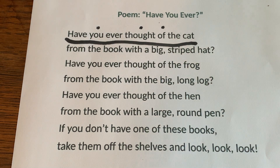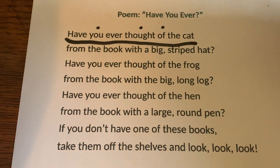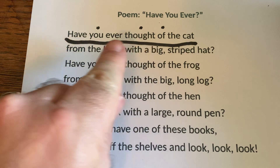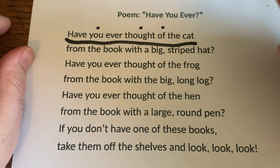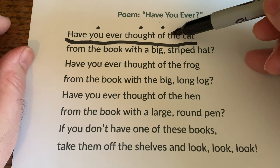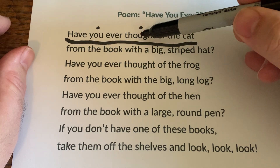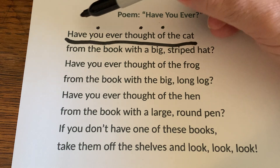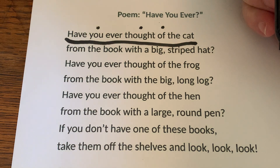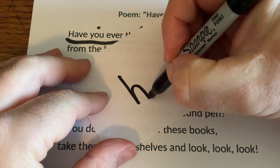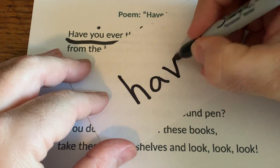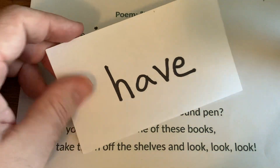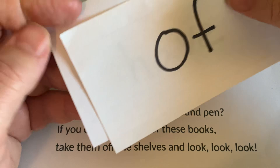Now I said there's another mystery word in that first line. The mystery word starts with an H. So somewhere in this line, there's another word that starts with an H — and that's our mystery word. Does cat start with an H? Nope. The — nope. Of — nope. Thought — nope. Ever — nope. You — nope. How about have? Does have start with an H? I believe it does. H-A-V-E. Have. So have is another one of our mystery words. So far we have have and of that we're going to add to our list of flashcards.